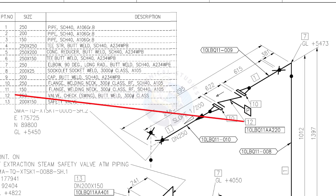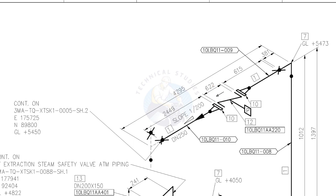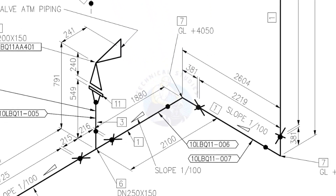Item number 12 is a check valve. Check valves have a flow direction mark on them. You can see the flow direction of this piping. Before installing the valve, make sure the flow direction is as shown on the drawing. Here, the slope ratio changes from 1 is to 200 to 1 is to 100. Remember, it is very important to read the drawing carefully before and during fabrication.